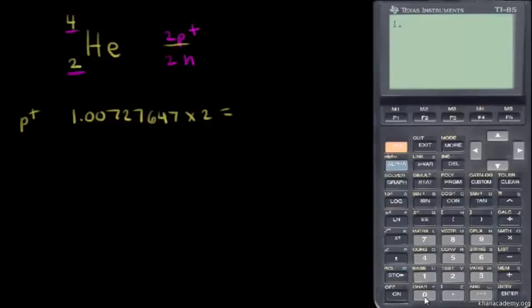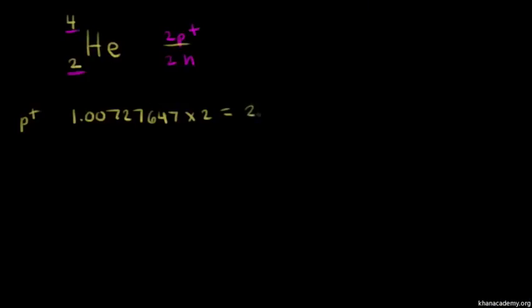So 1.00727647 times two gives us 2.01455294. This is equal to 2.01455294 AMUs — atomic mass units.